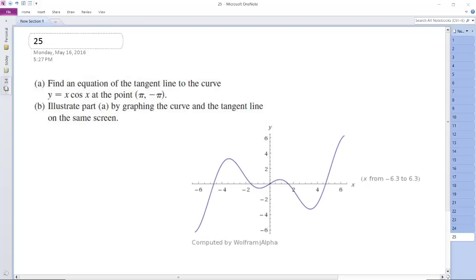All right, I find an equation that's tangent to the curve at point π, -π, and then we're going to illustrate it. So I've already got a graph here of this.